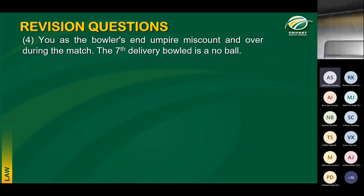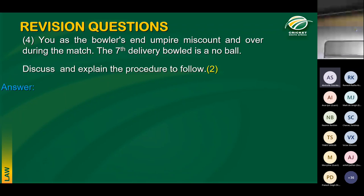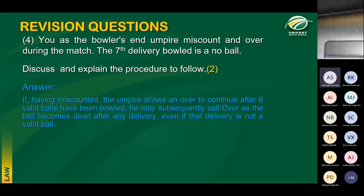The last Monday revision question: the umpire at the bowler's end allows a seventh ball to be bowled and that seventh delivery is a no-ball — what do you do? As soon as the umpire realizes that six valid balls have been bowled, he or she may call over. Even though the seventh ball was a no-ball, the umpire should call over.